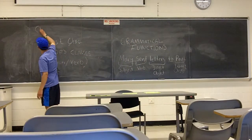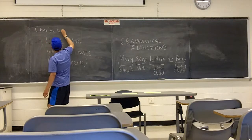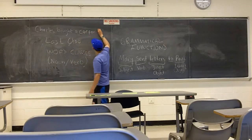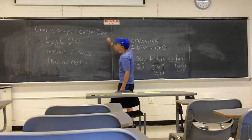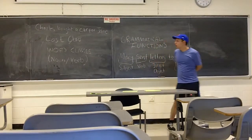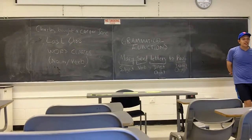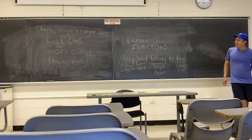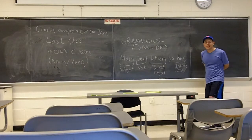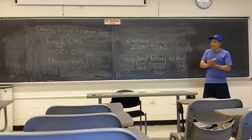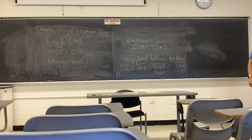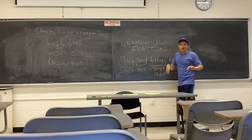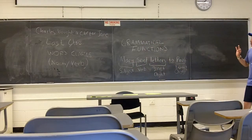Charles bought a car for Jane. So what is the subject of that sentence? Charles. Charles is the one who bought. What is the direct object? Car. Yes, the car is the direct object. And what is the indirect object? Jane. Yes, Jane, because Jane has a preposition. So we are clear on that — you know what the subject is, the direct object, and the indirect object.